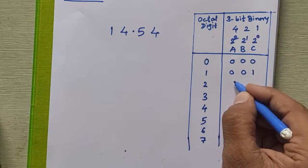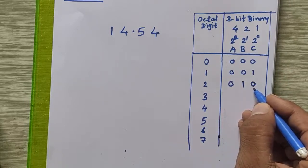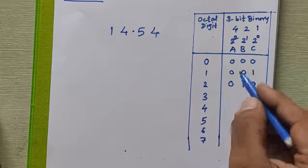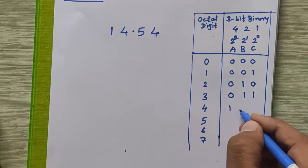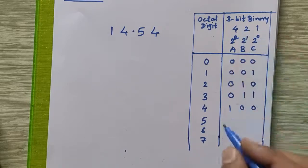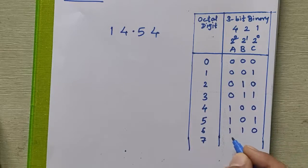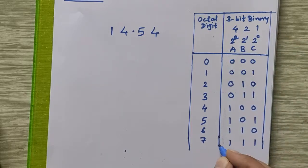For two, we place a 1 in the 2's position: 010. For three, the last two digits must be one: 011, since 2+1=3. For four, it is 100, since only the 4-bit is on. For five, 4+1=5, so first and last bits are one: 101. For six, 4+2=6, giving 110. For seven, all bits are on: 4+2+1=7, giving 111.